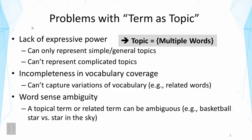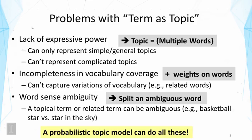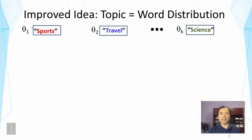To address the second problem, we need to reduce weights on words, which allows distinguishing subtle differences in topics and introduces semantically related words in a fuzzy manner. Finally, to solve the problem of word ambiguity, we need to split an ambiguous word so that we can disambiguate its topic. It turns out all these can be done by using a probabilistic topic model, and that's why we're going to spend many lectures on this topic.